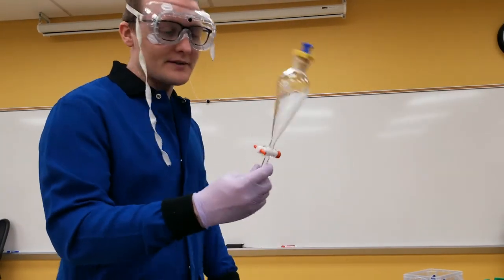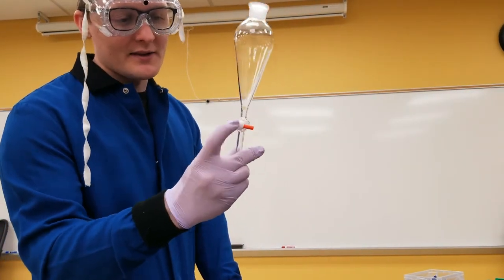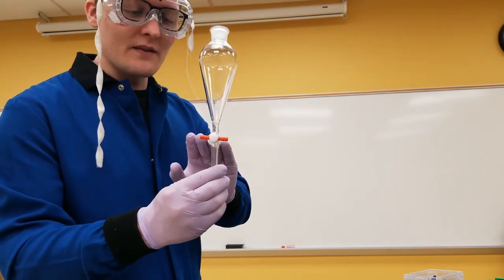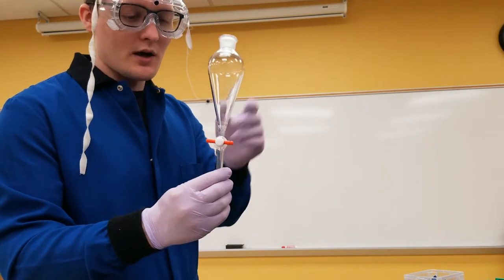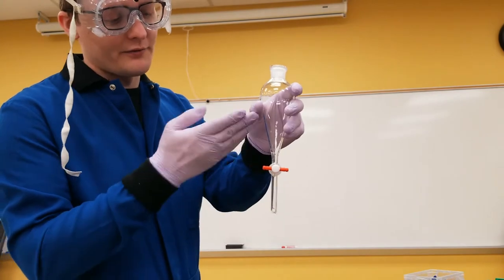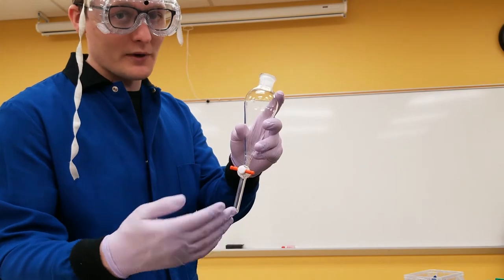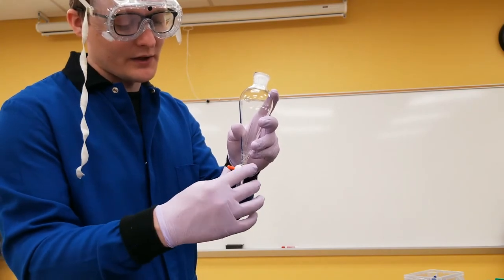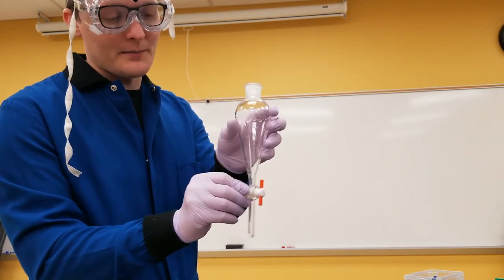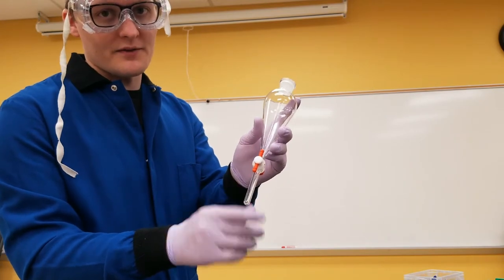So here's my separatory funnel. The first thing I want to introduce you to is this, which is the stopcock. As it is right now, this is in the closed position. I like to think of it as like a little wall which is blocking the liquid from flowing out. In order to let liquid flow later when I'm trying to collect my layers of solvent, I will turn it vertically and that allows a little hole in the stopcock to allow flow through the stem of the sep funnel down here.